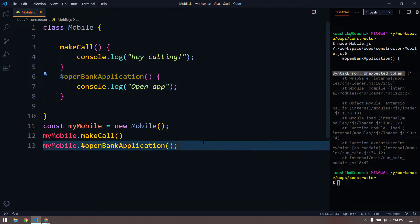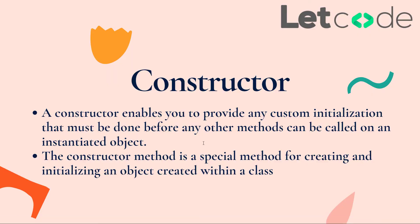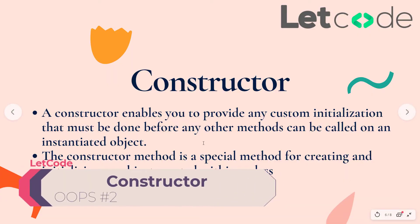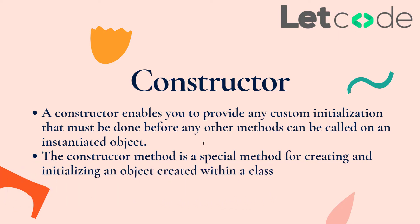That's how we declare a private method. Now today's topic is all about the constructor. Basically, a constructor enables you to provide any custom initialization that must be done before any method is called or an object is created. We'll see what that really means through an example.